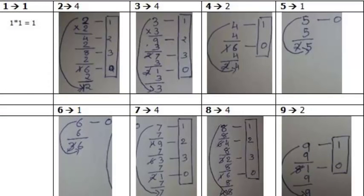Here is a reference table showing the frequency of all single-digit numbers. From the table: frequency of 1 is 1, frequency of 2 is 4, frequency of 3 is 4, frequency of 4 is 2 — meaning after two series multiplications the number repeats. Frequency of 5 is 1, frequency of 6 is 1, frequency of 7 is 4 as we found in the video, frequency of 8 is 4, and frequency of 9 is 2. You can refer to this table instead of calculating the frequency each time.